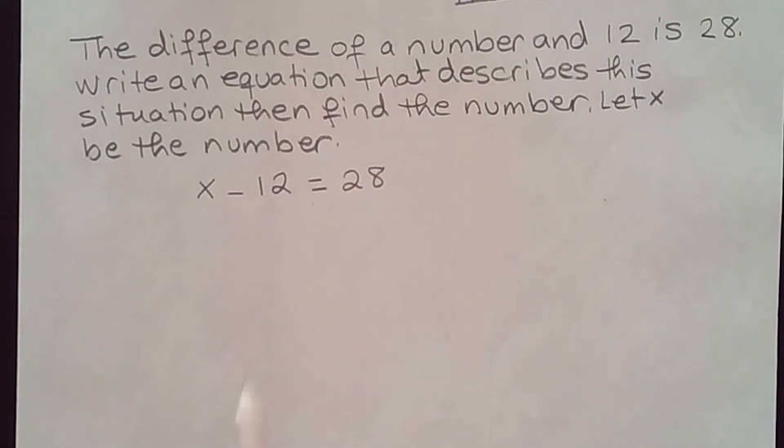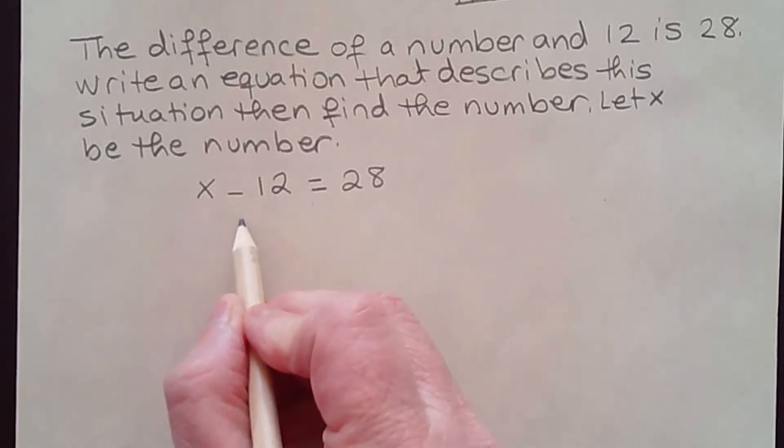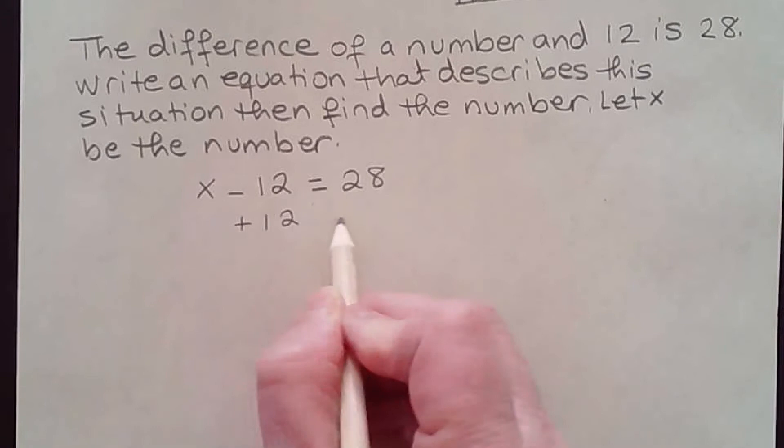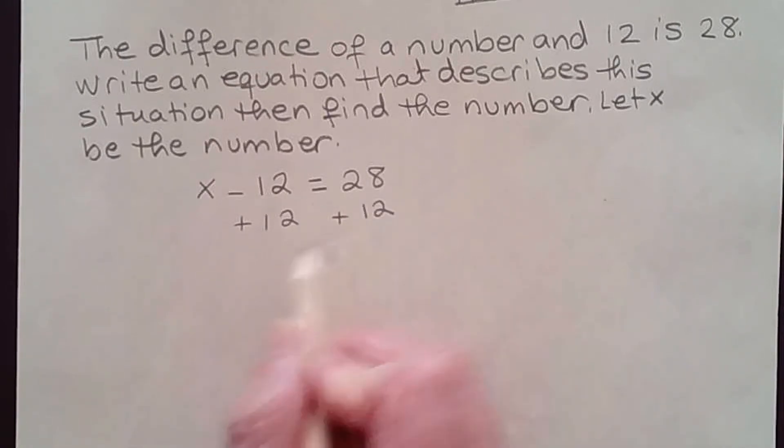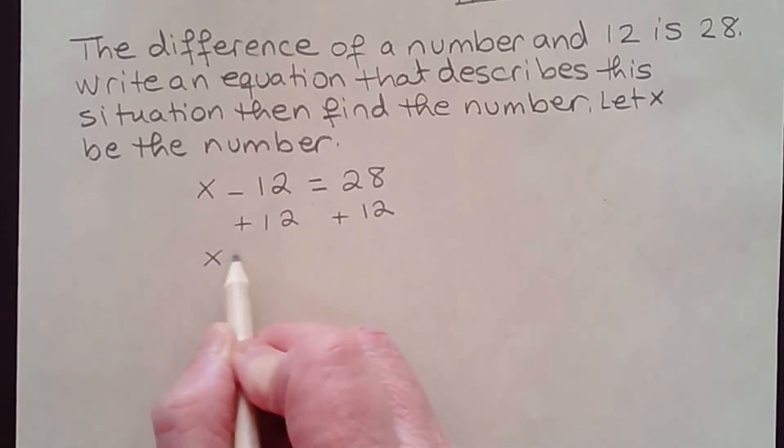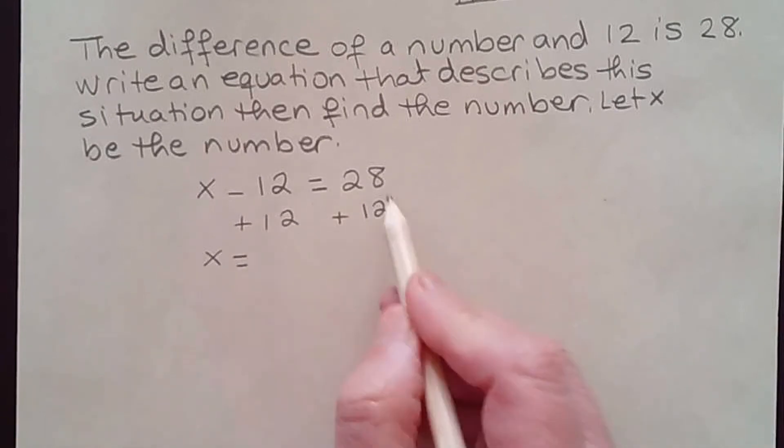The difference of x and 12 is 28. Here's the equation. Now I can find the number by solving for it. So I'm going to have to add 12 on both sides, and x would be equal to—this cancels—28 plus 12 is 40.